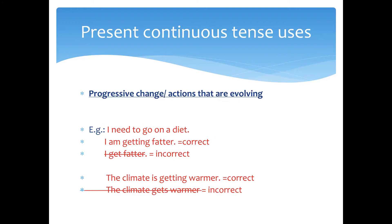The second use of present continuous is for progressive changes — actions that are evolving. For example: 'I need to go on a diet, I'm getting fatter.' We cannot say 'I get fatter' — that is incorrect. 'You're getting fatter' means that at a particular time or period, the change is ongoing. That is why it is an evolving, progressive change. Another example: 'The climate is getting warmer.' We cannot say 'The climate gets warmer' because the change is progressive and not completed yet.